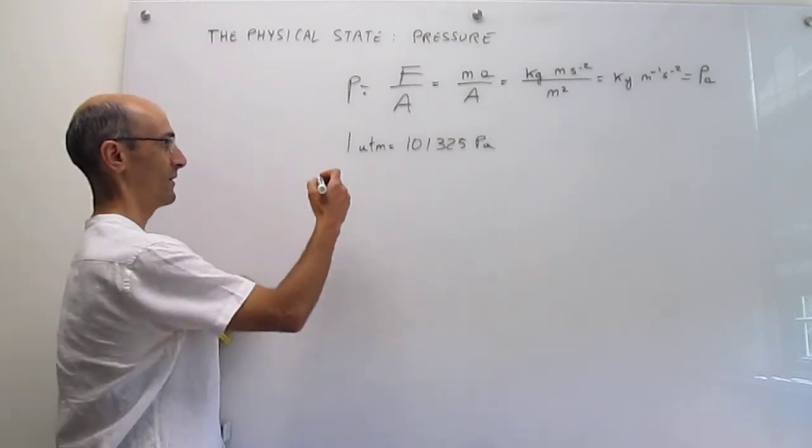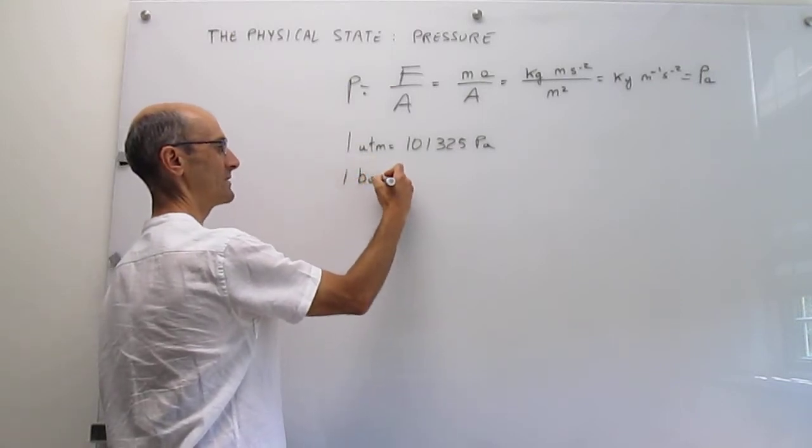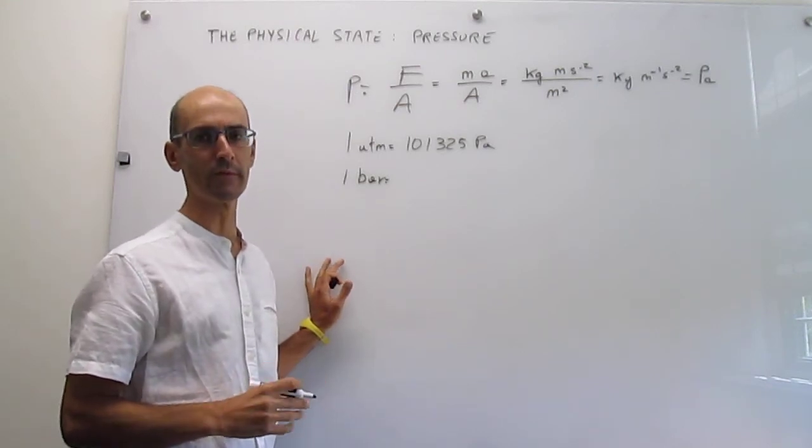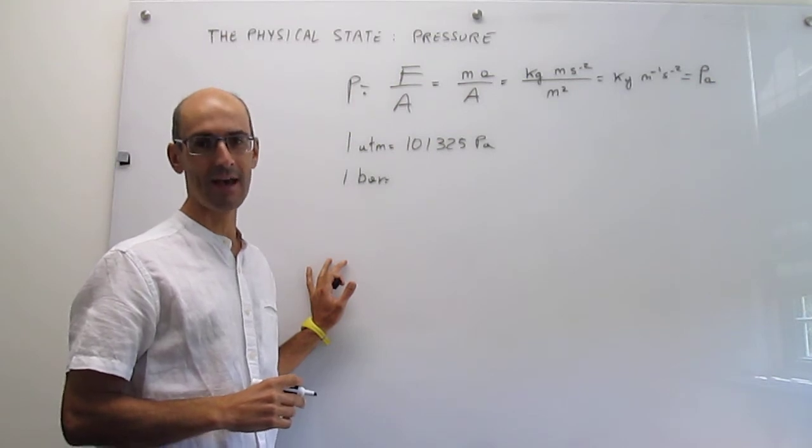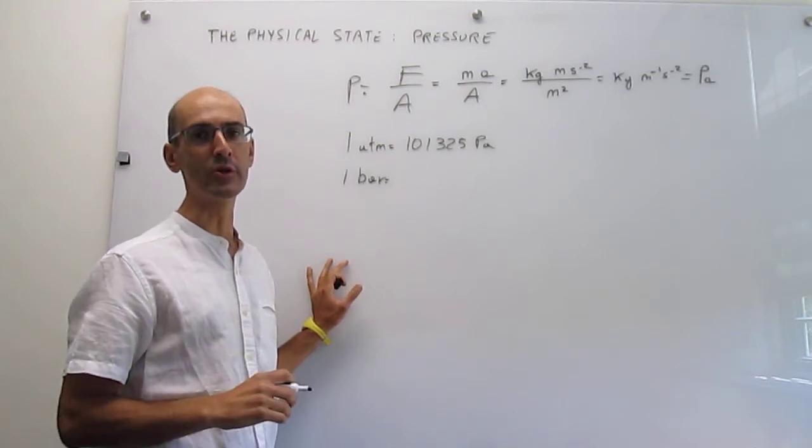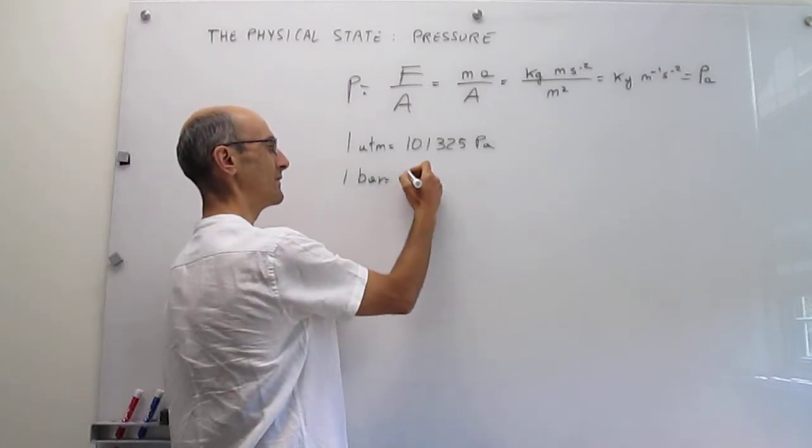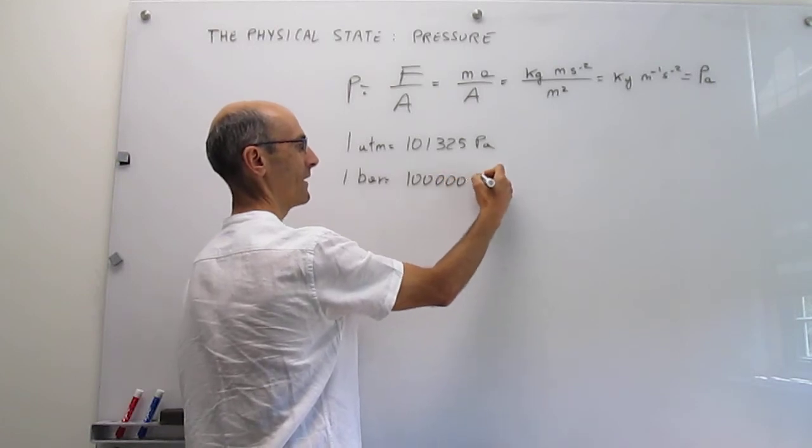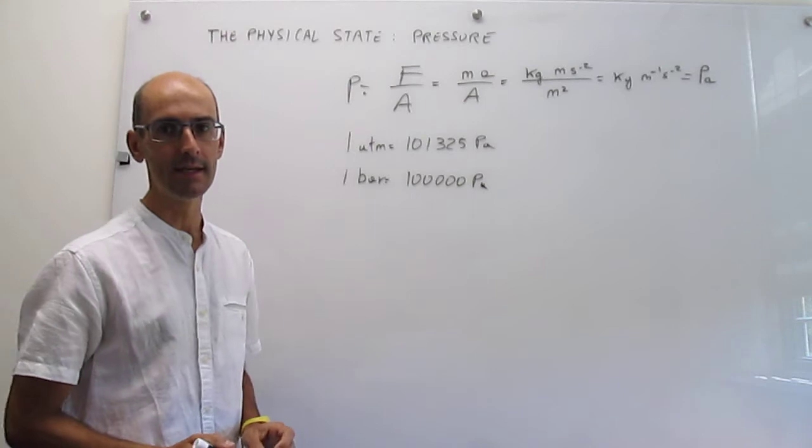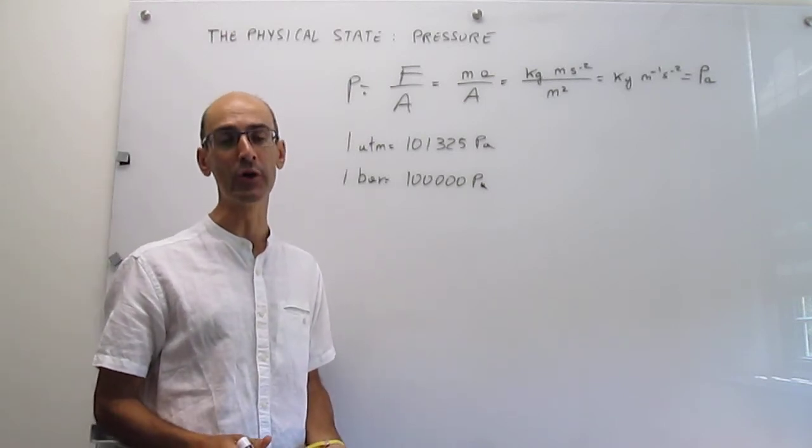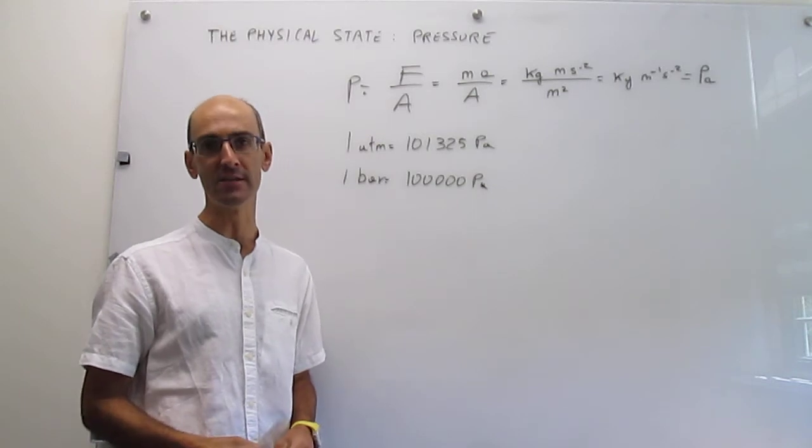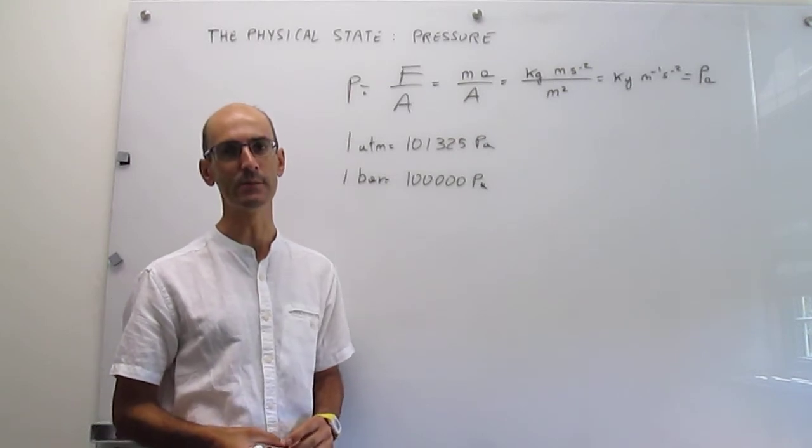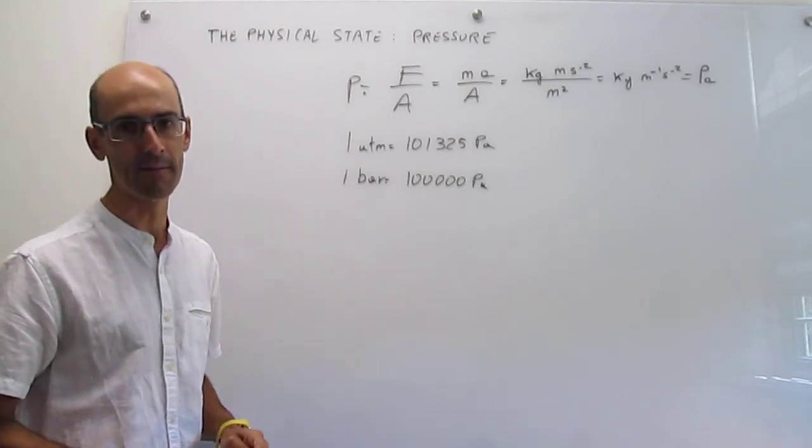There are more units of pressure that will be interesting. The bar will be interesting because in the future we will be referring to standard conditions, and those standard conditions imply that the pressure should be one bar. In reality, the difference between one bar and one atm is very small and actually only different by about one percent.